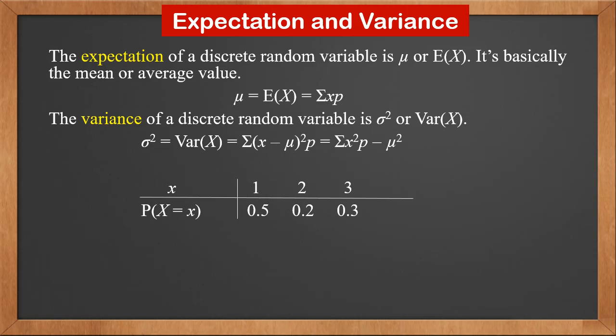Given this probability distribution, we can find E(X). It is Σxp, which is 1 × 0.5 + 2 × 0.2 + 3 × 0.3. The result is 1.8.